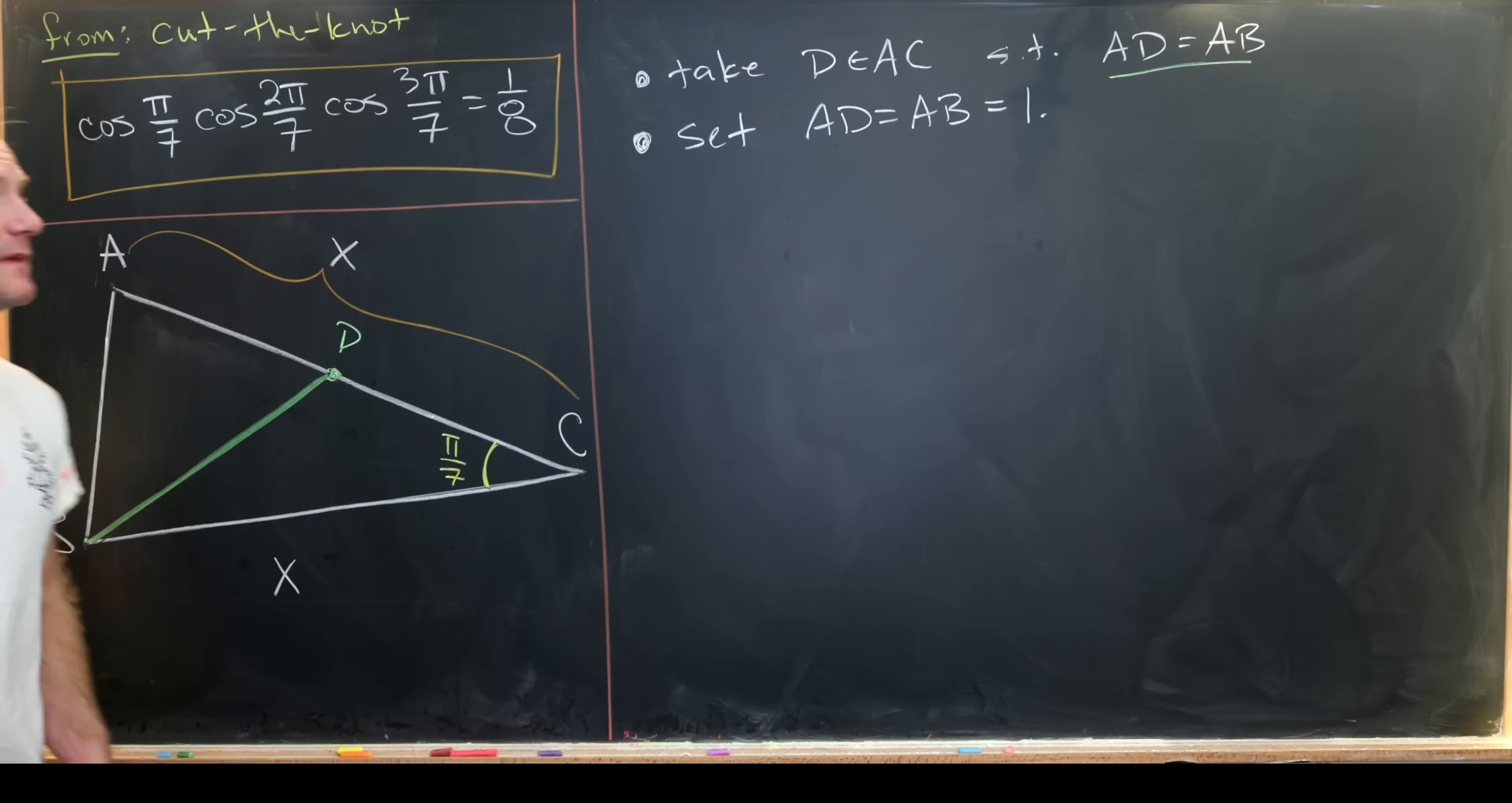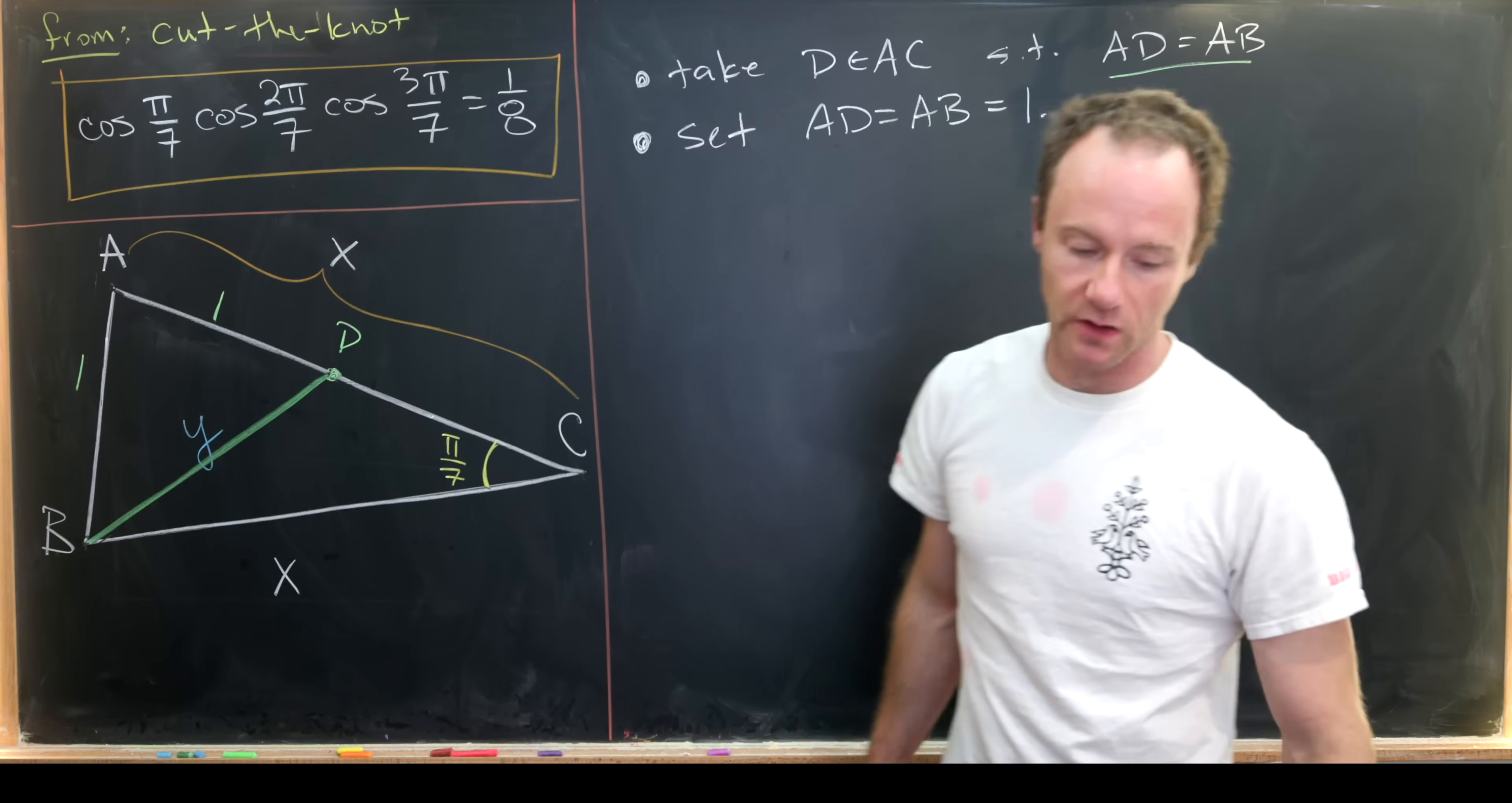And now we've got a couple of measurements to add. So we'll add in this AD is 1. This AB is 1. And then we'll say that BD has length y. So that's the name that we'll give to the length of BD. Okay now let's do a little bit of angle chasing.